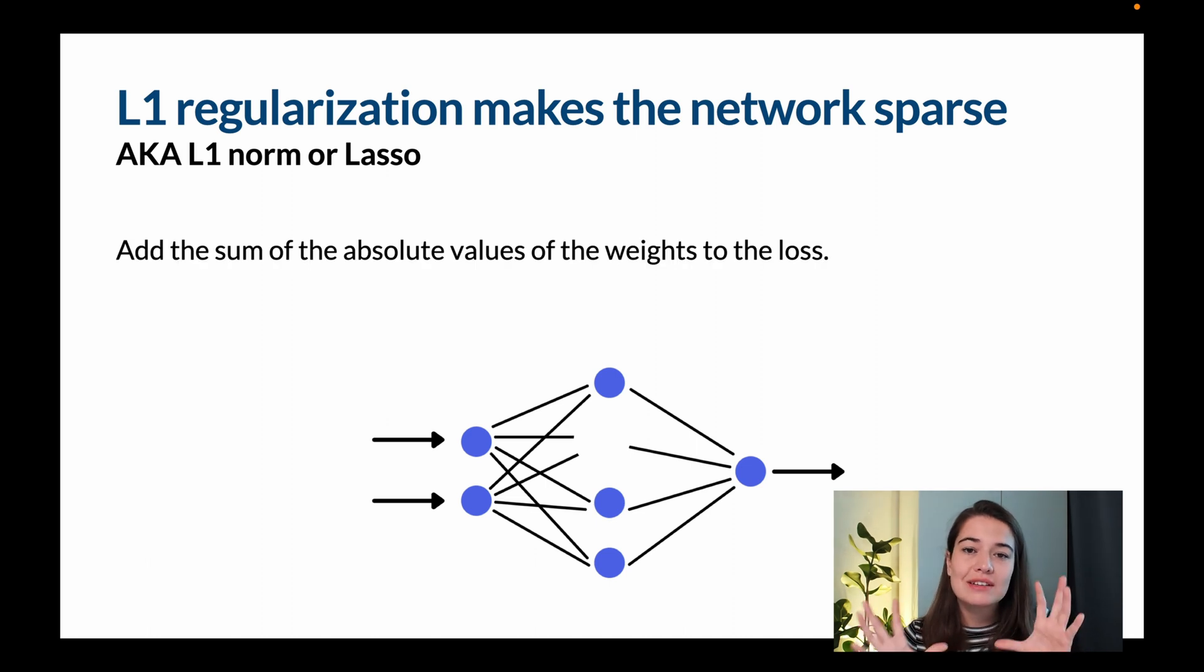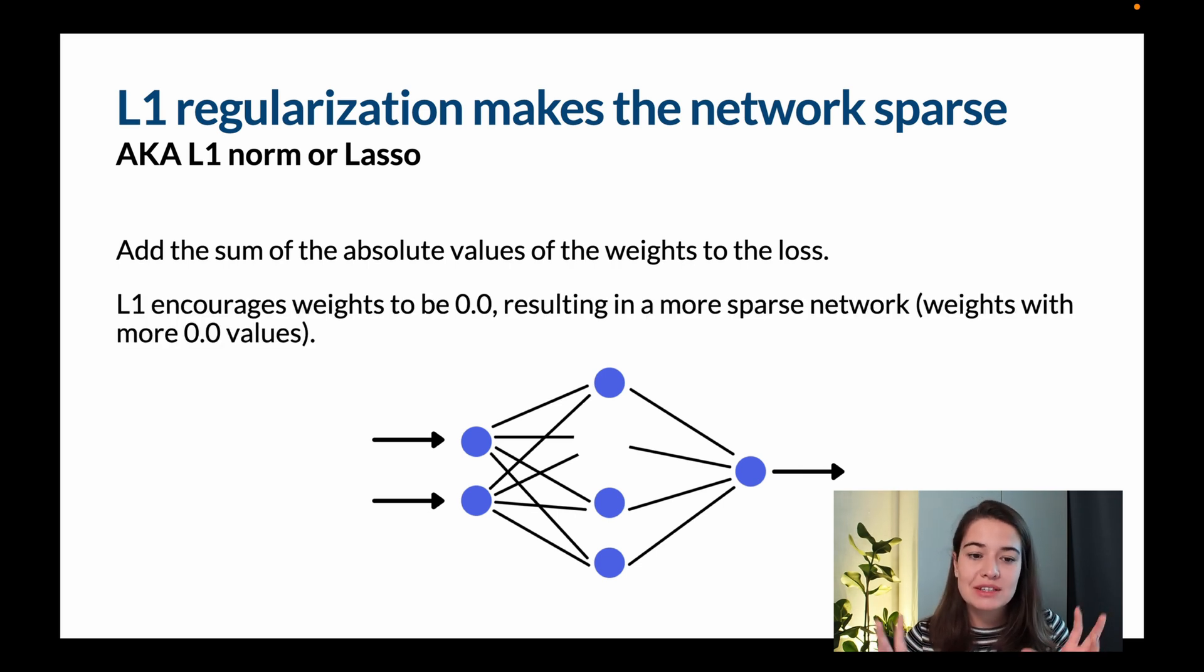You are adding the sum of the absolute values of the weights to the loss. So it doesn't matter if your weights are negative or positive, you sum them all up using the absolute values, and then you add it to the cost. And what happens is, as a result, L1 regularization encourages the network to have weights as low as zero.